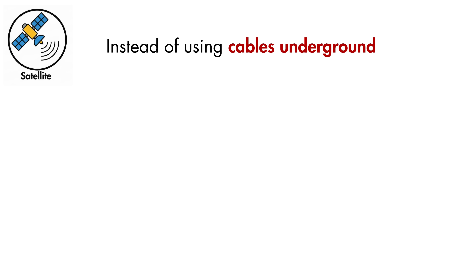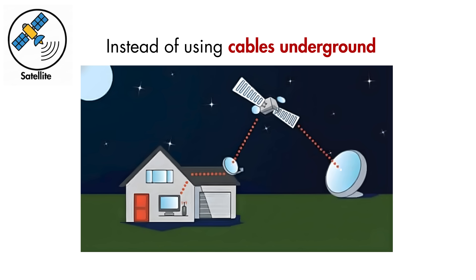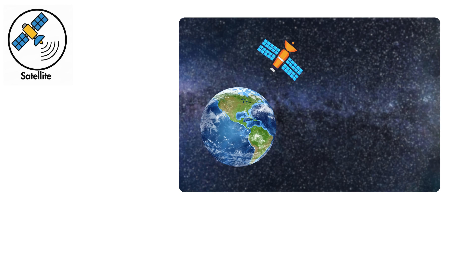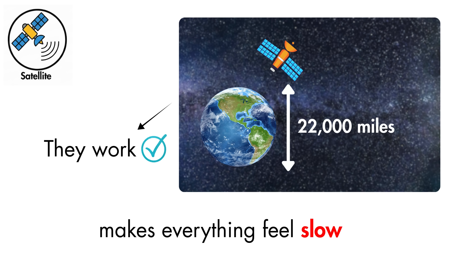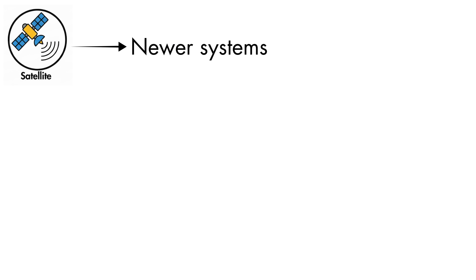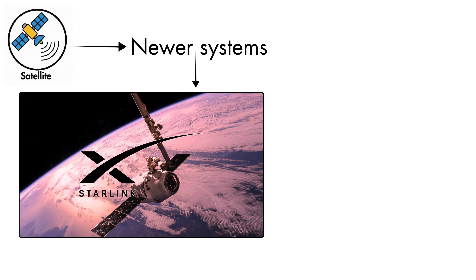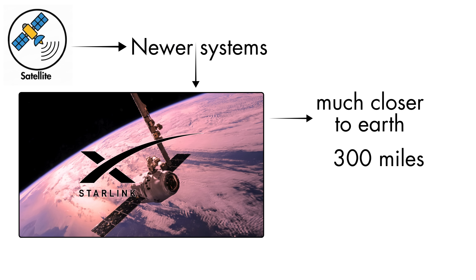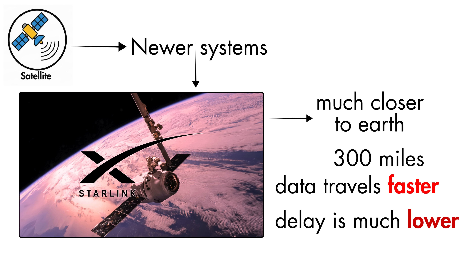Satellite Internet uses satellites orbiting the Earth instead of cables. Your home dish sends a signal up, the satellite relays it to a ground station on Earth, and the Internet comes back to you the same way. Older systems use large satellites sitting very high in space, about 22,000 miles up — they work, but the distance makes everything feel slow. Newer systems, like Starlink, use small satellites much closer to Earth, around 300 miles, so data travels faster and the delay is much lower.